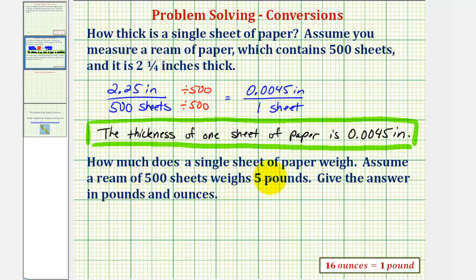Next, how much does one sheet of paper weigh? Assume a ream of five hundred sheets weighs five pounds. We want to give the answer in both pounds and ounces.